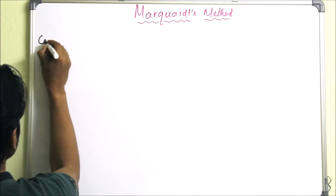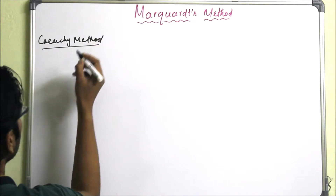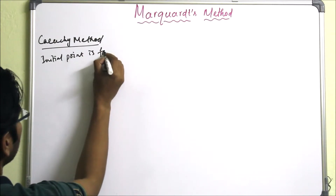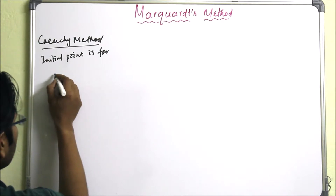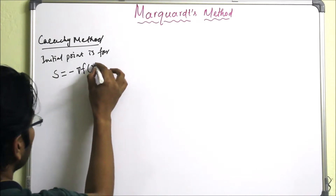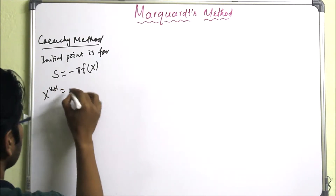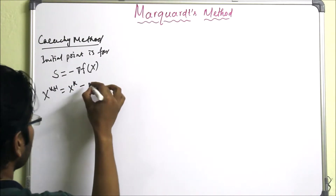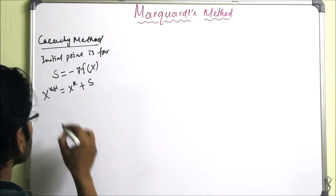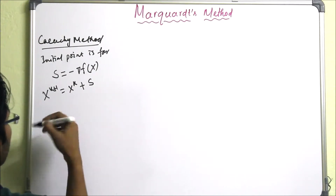We know that the Cauchy method is useful when the initial point is far from the minimum. In the Cauchy method, we have to construct S as the negative gradient of F(X). We then find X_{K+1} using X_K plus S. So the Cauchy method is useful if the initial point is far from the minimum.